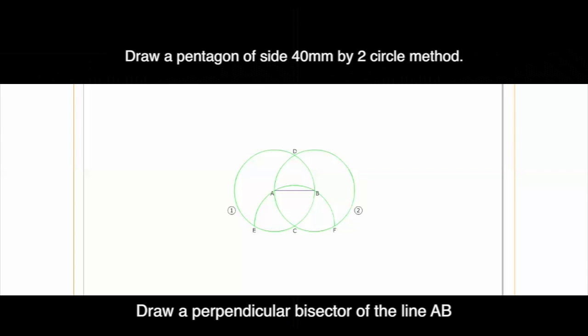Draw a perpendicular bisector of the line AB to cut the arc EF at G.